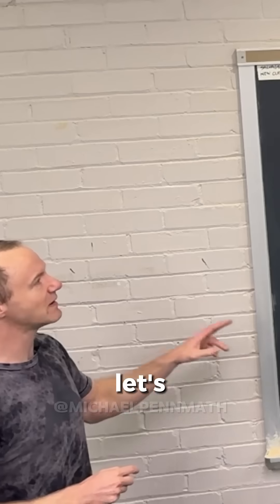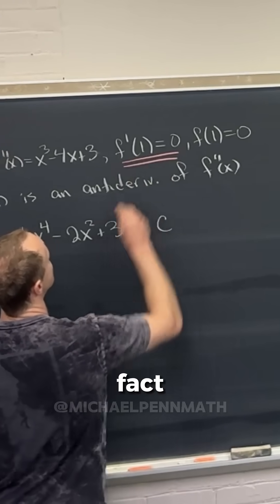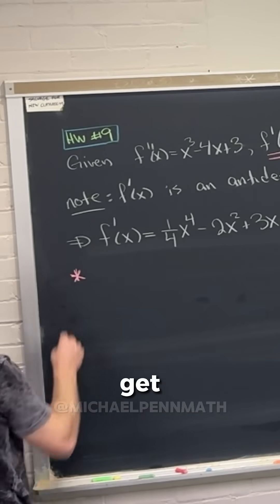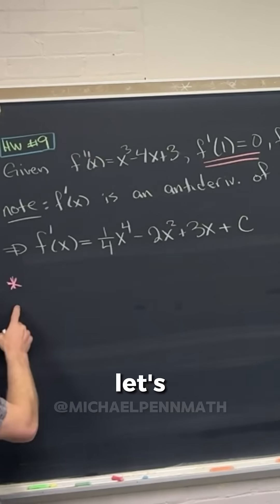We've got this point right here, but let's go ahead and use this fact that f prime of one is equal to zero to get us a final version of f prime.